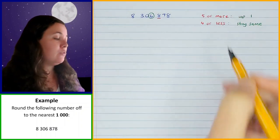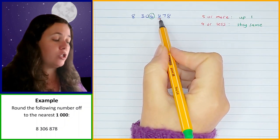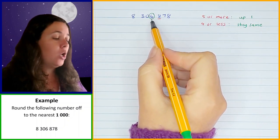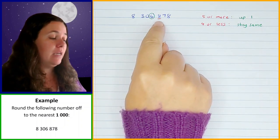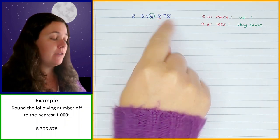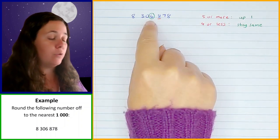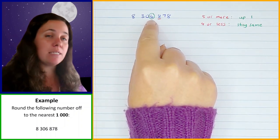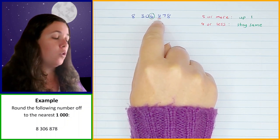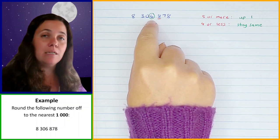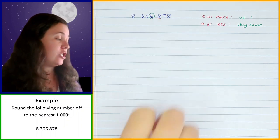So that is what we need to identify — what is the next digit telling us to do to the digit in our rounding position? In this case, the 8 fits into the 5 or more category, so we need to go up 1 with the 6. It changes from 6, goes up 1, and changes to 7. Then once I know that, all of the digits after the 1,000th position are going to change to zeros.